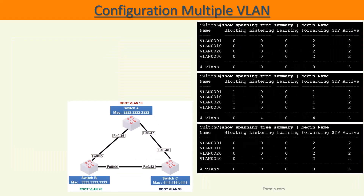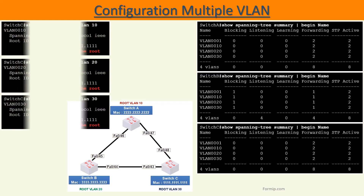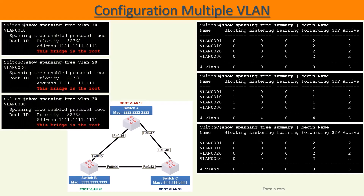The command 'show spanning-tree summary' provides a quick overview of topologies. Here we see that on switch B, all VLANs are in a blocked state. And if we use the 'show spanning-tree' command on switch C, we see that it is elected the root bridge for all the VLANs.